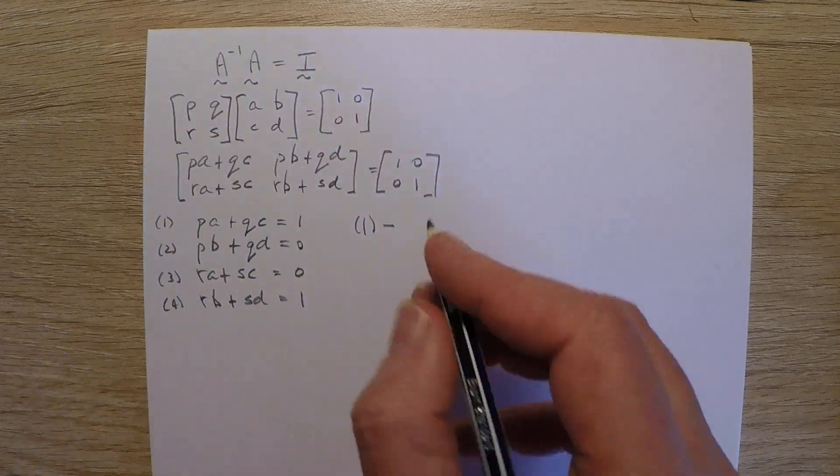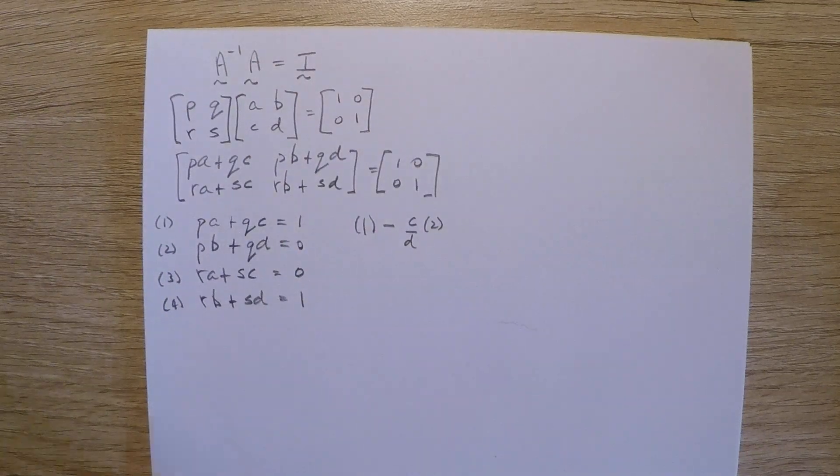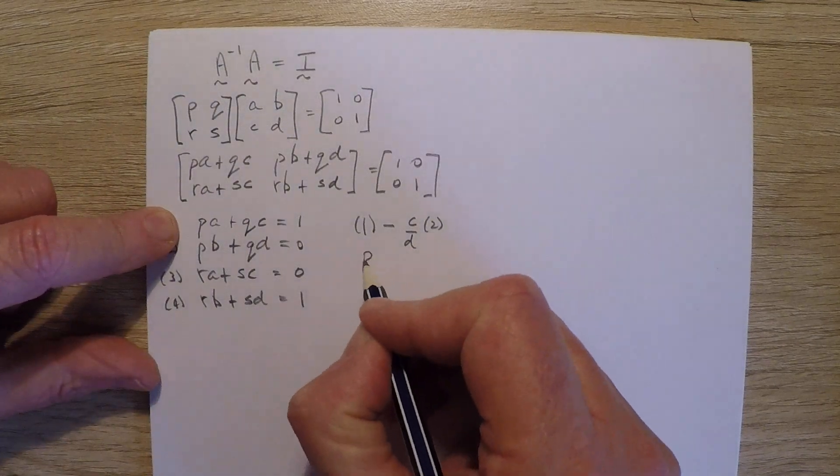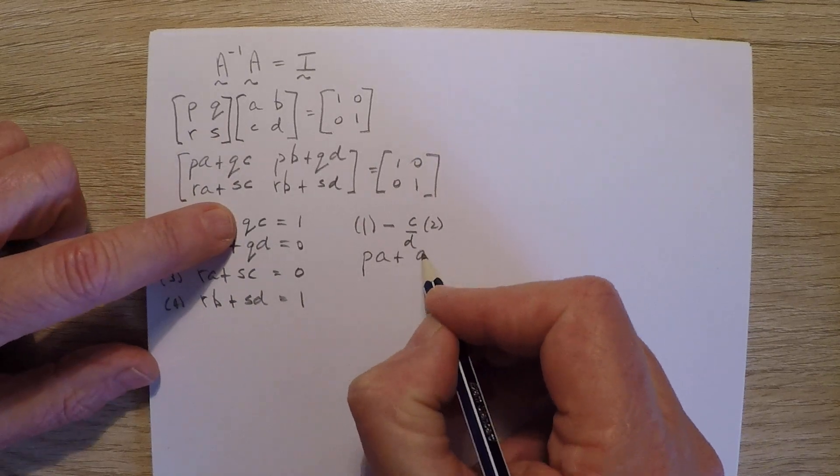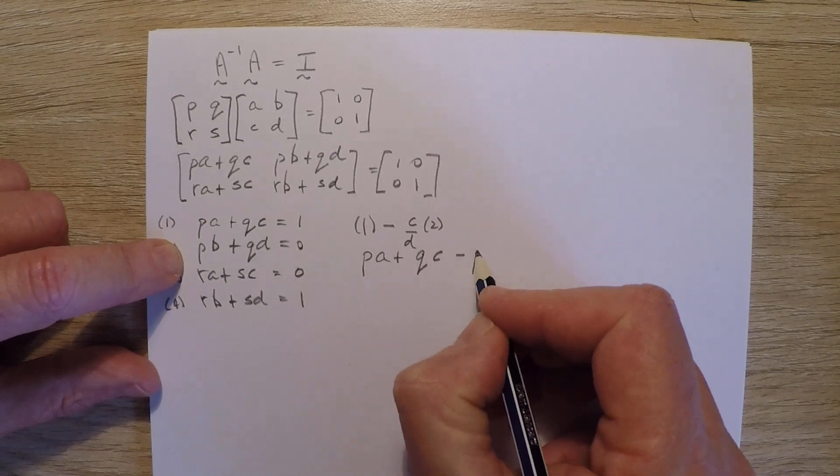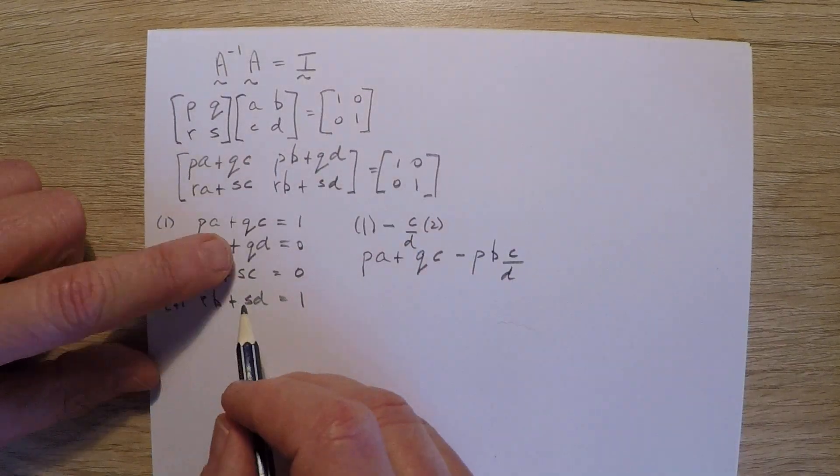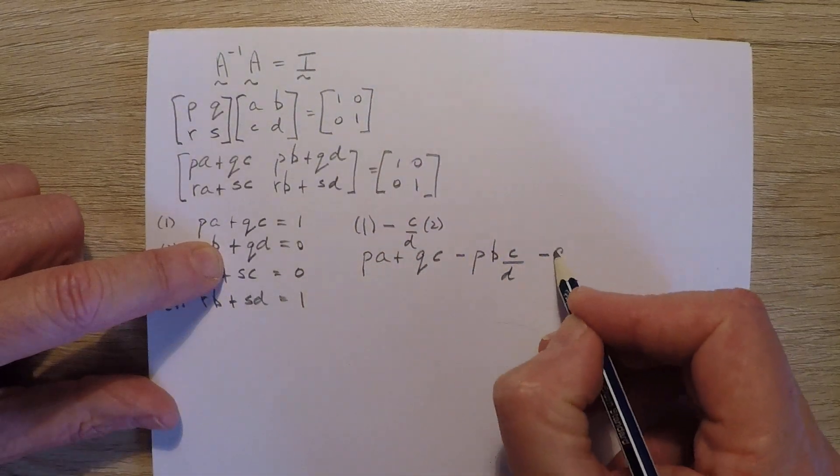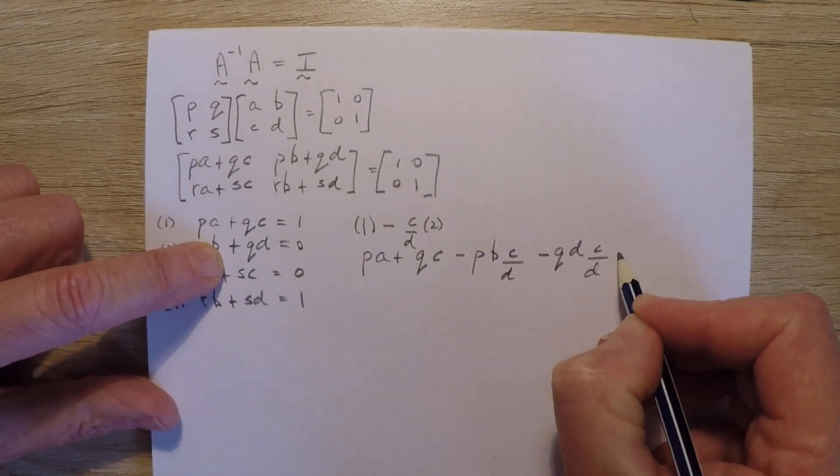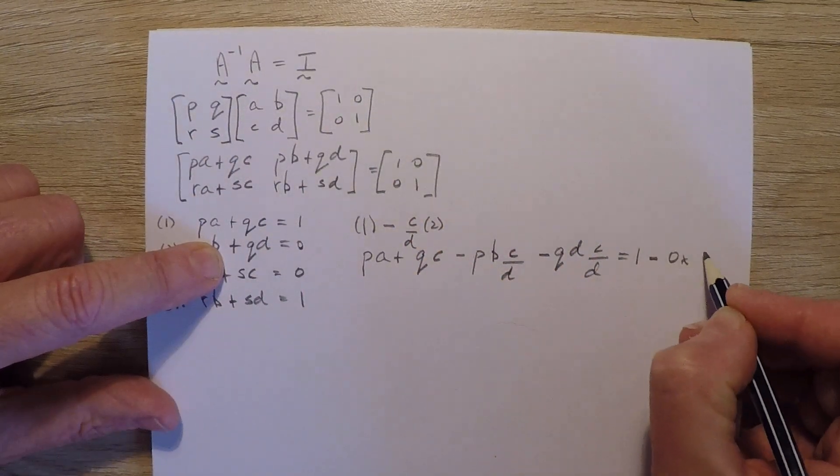If I do equation number 1, subtract - now I'd want to subtract C over D multiplied by equation 2. I'm looking here to eliminate Q. So let's write out what that would be. Equation 1 would be PA plus QC. Now if I multiply this constant here, I've got negative P, then B, and I've multiplied by the term C over D. Now I've got this one. It'll be negative. If I've got Q and D, and I've multiplied by the term C over D, it would equal 1 from the first equation, subtract 0 multiplied by this C over D factor.